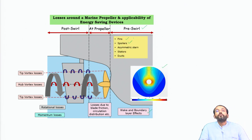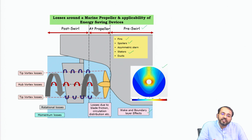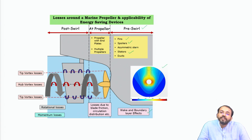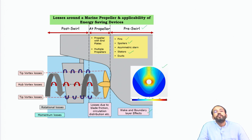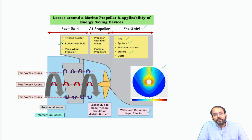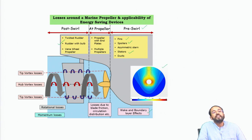In the pre-swirl region, we have fins, spoilers, the concept of an asymmetric stern, stators, and ducts, which can be used to make the flow into the propeller more uniform. At the propeller, end plates can be used for tip-modified propellers, or multiple propeller configurations to reduce thrust loading and get better performance. Behind the propeller, concepts like twisted rudder, rudder with bulb, Grimm vane wheel, and propeller boss cap fins can reduce losses in the slipstream.